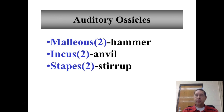In the middle ear, behind the eardrum and connecting the eardrum with the cochlea, are three of the smallest bones in the body called the auditory ossicles — one set in each ear: the malleus, incus, and stapes, or the hammer, the anvil, and the stirrup. They transmit sound from the tympanic membrane to the organ for hearing, the cochlea.